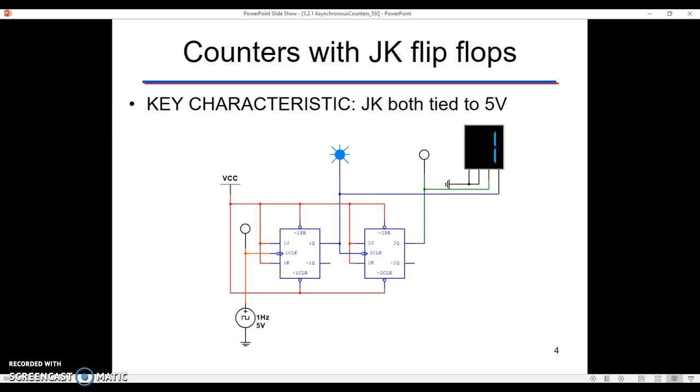So a JK flip-flop, the way that we create a divide-by-two, if you refer back to quite a few videos ago now, the way that we do that is we tie J and K both high. When they're both high, that's in toggle mode. That means the Q output is going to continually just flip back and forth.